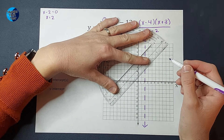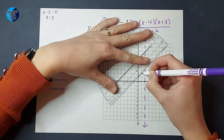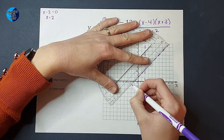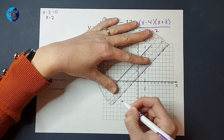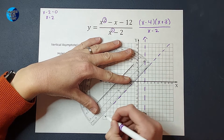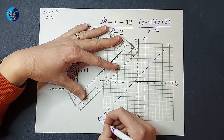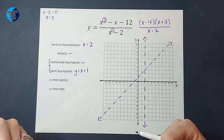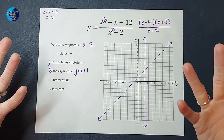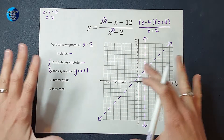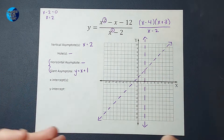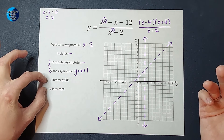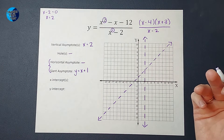I'm going to represent the slant asymptote with a dotted line. An important fact: horizontal and slant asymptotes can actually be crossed sometimes — vertical ones absolutely cannot. I know what you might be thinking: what's the point if they can be crossed? Well, they still help us understand the shape of our graph and help us know what areas the graph is approaching, so they're still very helpful.